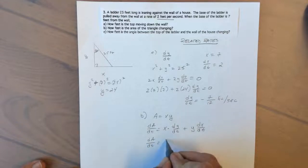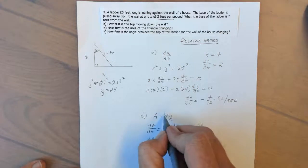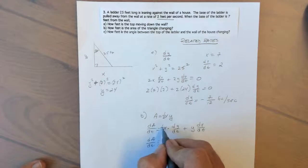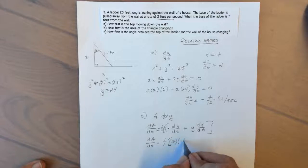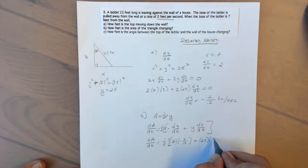We're going to be using the value of dy/dt that we found in the previous problem. We have one half for a triangle, and then x would be 7, that's the distance from the wall, dy/dt is negative 7/12, y we found was 24, and dx/dt was 2.